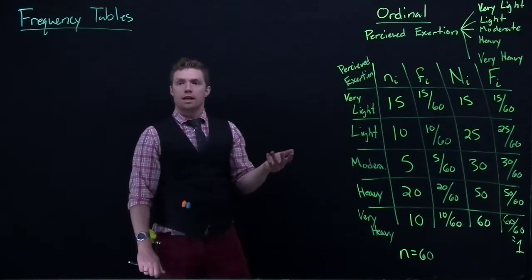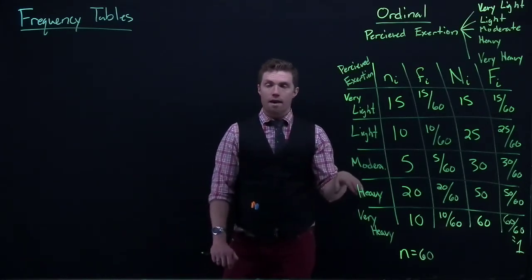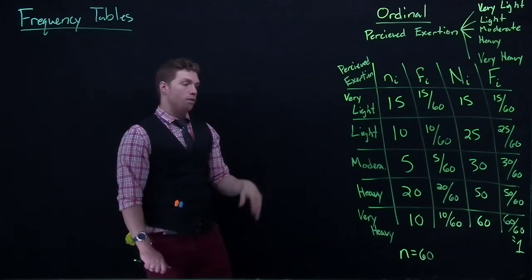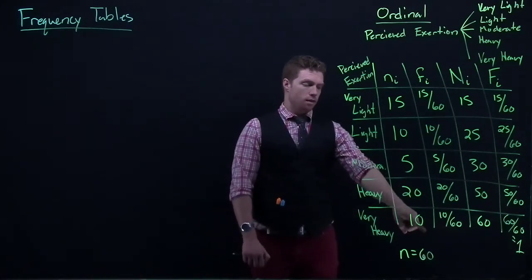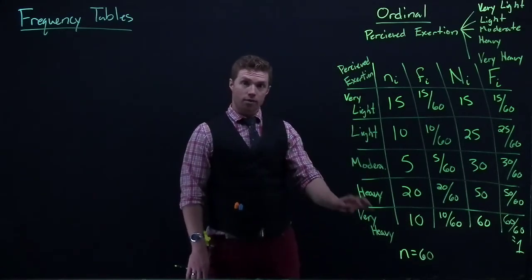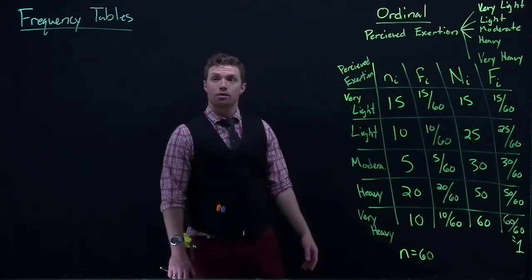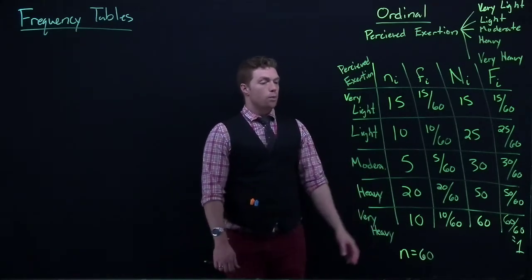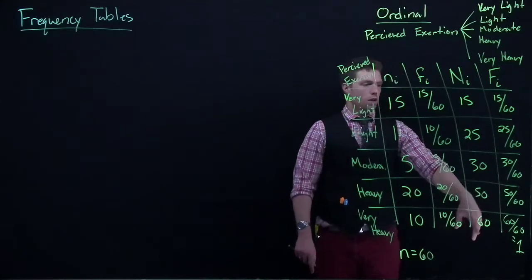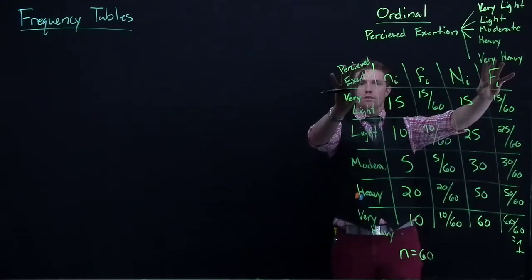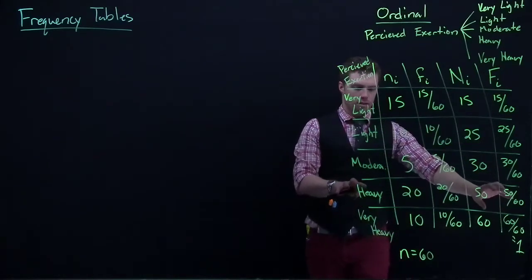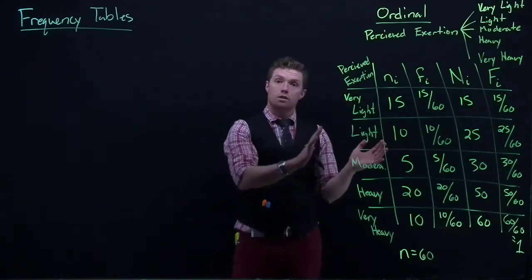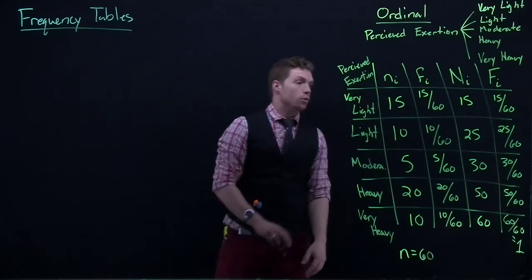Now, we could also flip that on its head and we can ask another question. What if we want, instead we want to ask, what percent of the games was he exerting heavy or more? And you look at this and we actually can't answer it directly from here, but we can do some simple math. What we would do is we'd take 20 plus 10 and divide it by 60, where it's like heavy or higher. That would be 30 games where he was exerting heavy or harder. There's another way that we could look at it. We could say, well, we know that 30 out of 60, he was moderate or less. And so if we do one minus this, we can say that he's heavy or above.